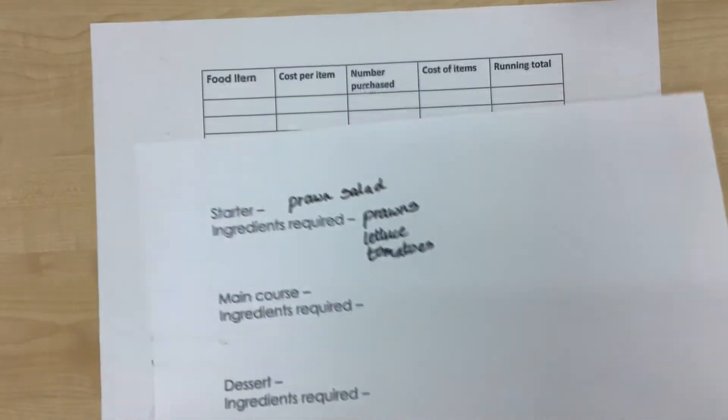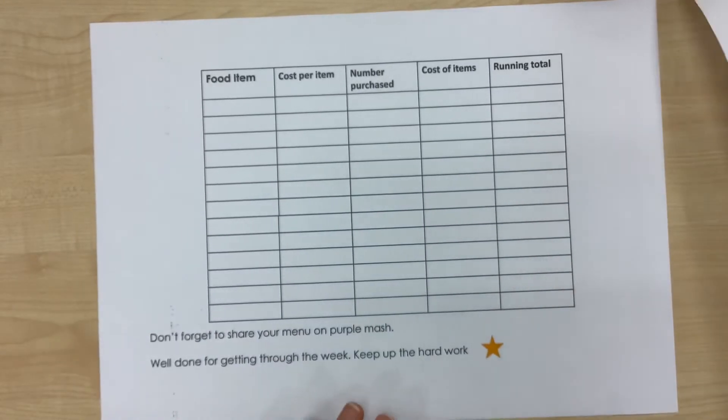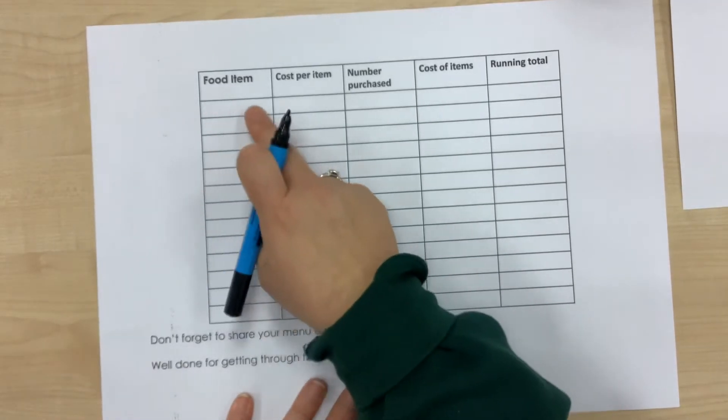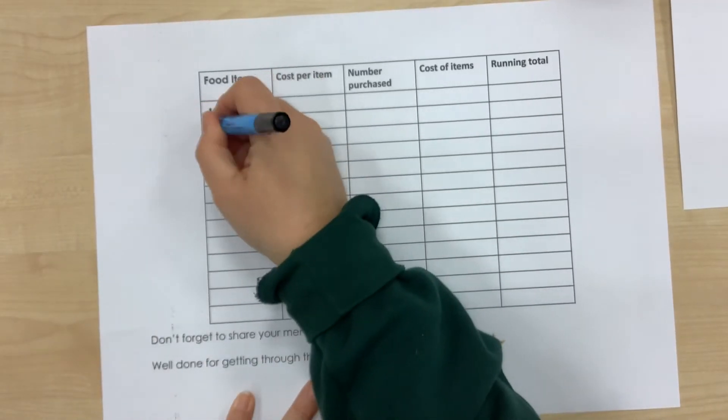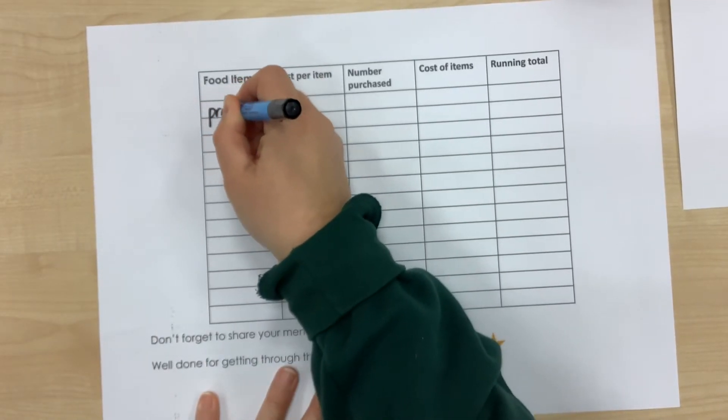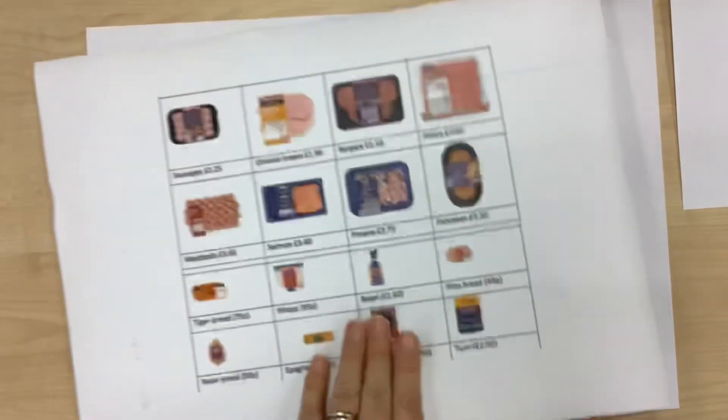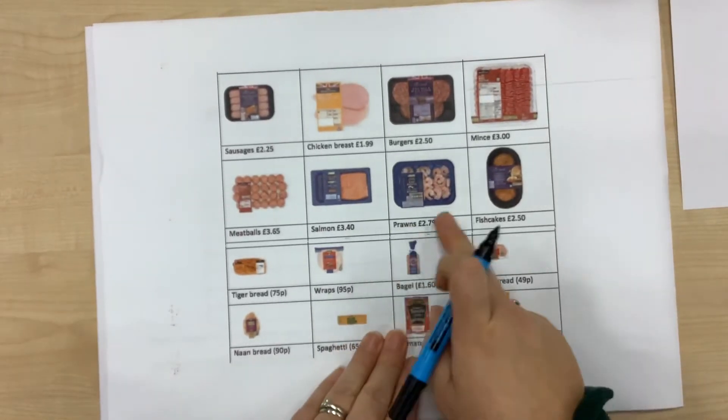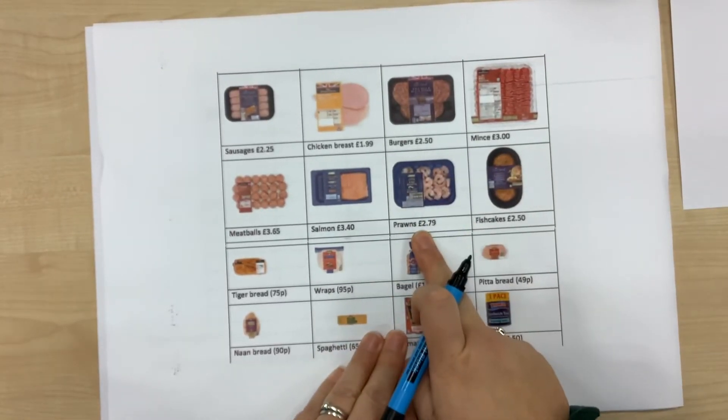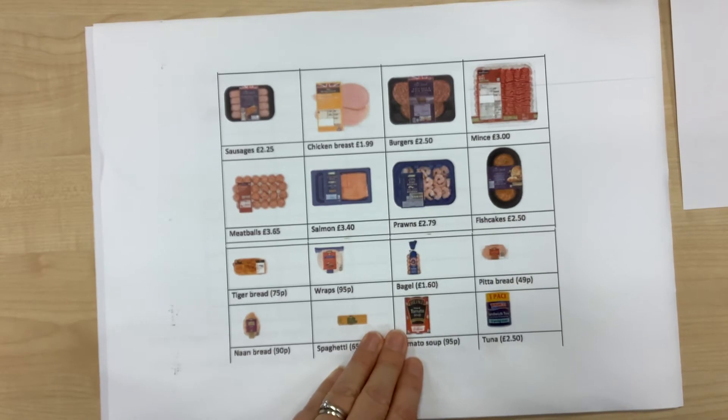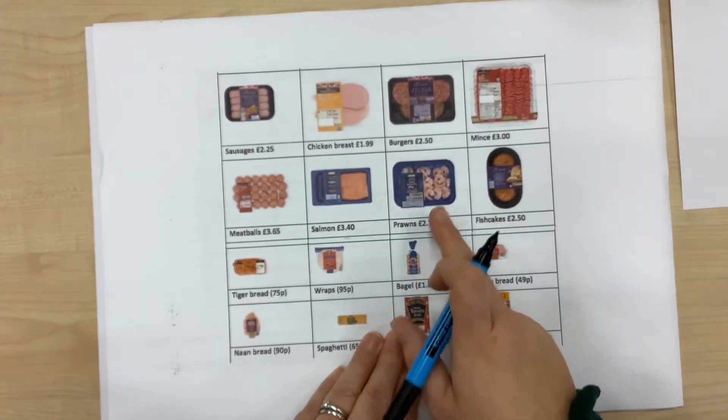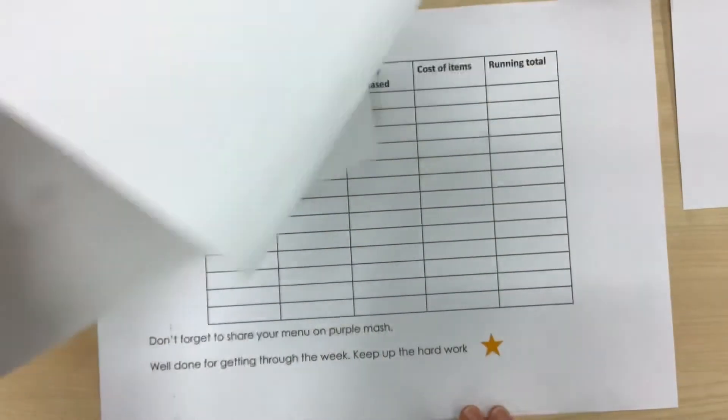We then need to go to the next sheet to work out the running costs of our menu. So the food item, prawns. I go to the shop and I find the prawns, and I look at the packet of prawns and I think, okay, it's £2.79 for one packet. Are there going to be enough prawns in there for a family of four? Now, Mr. Murray really likes prawns, so he'll want a nice big healthy portion. So I think I'm going to need two packets of prawns.